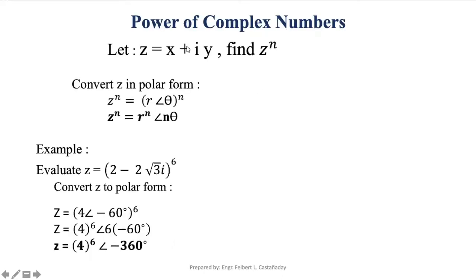Now let's go to the power of complex numbers. Let z equal x plus i times y, the rectangular form. To find z raised to a power integer n, we first convert the complex number from rectangular form to polar form. Once in polar form and raised to power n, the modulus becomes r raised to n, and the argument theta is multiplied by n.